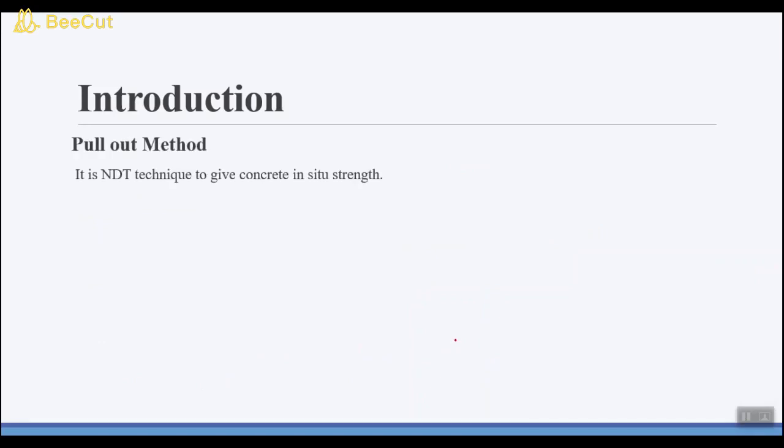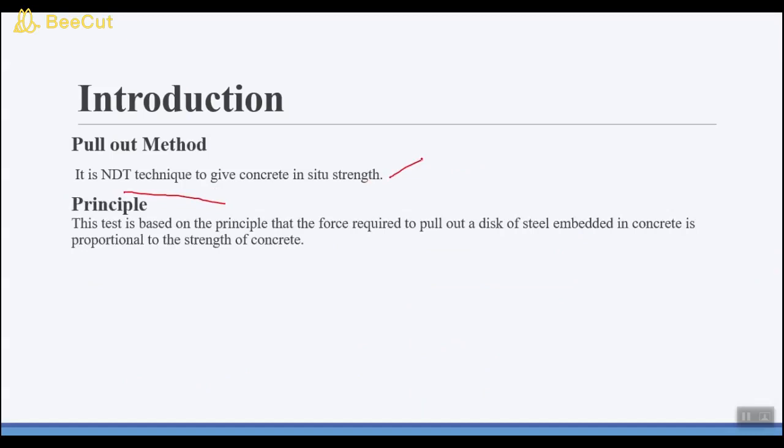Pullout method is a non-destructive technique to give in-situ concrete strength. This is based on the principle that the force required to pull out a disc of steel embedded in concrete is proportional to the strength of concrete.